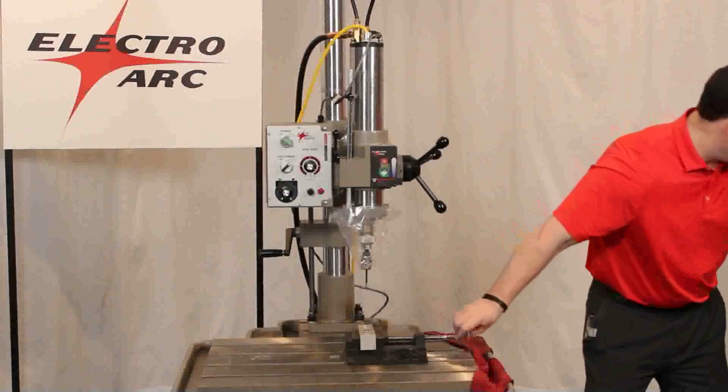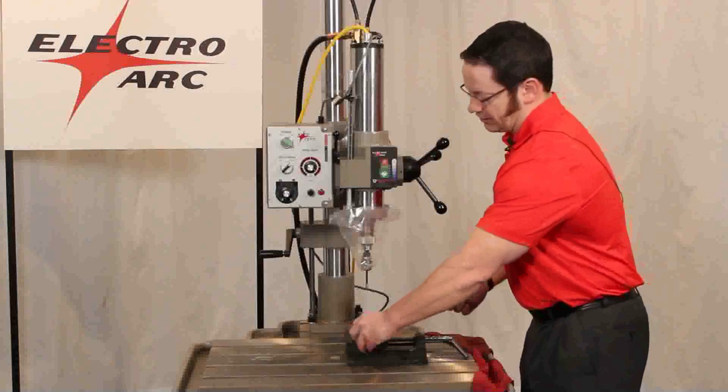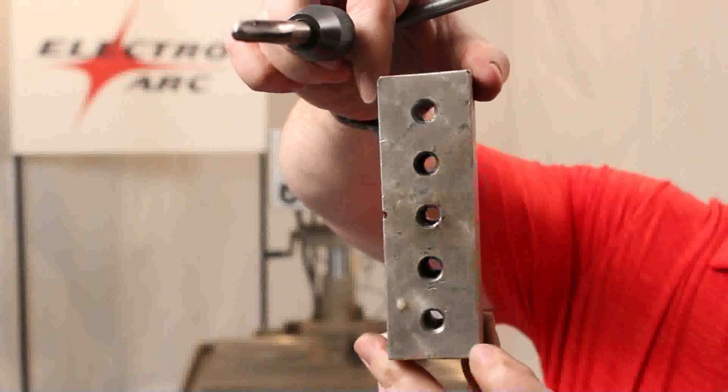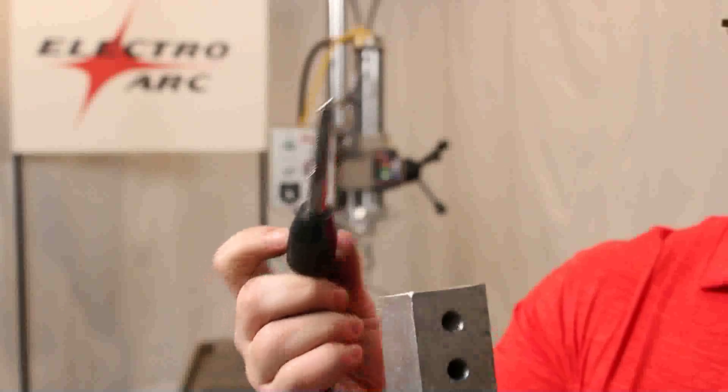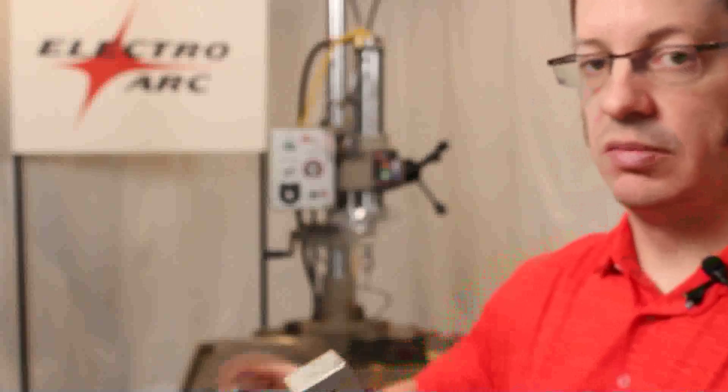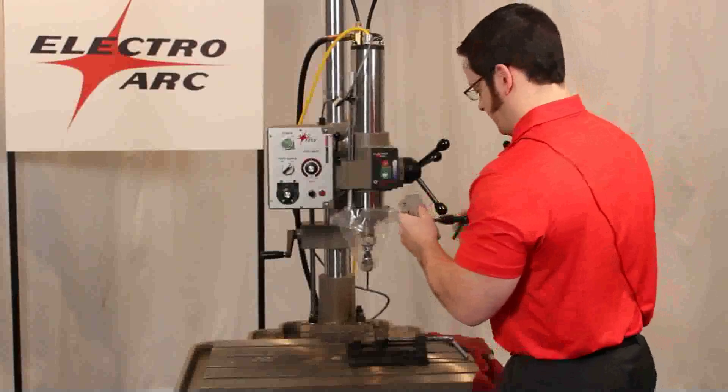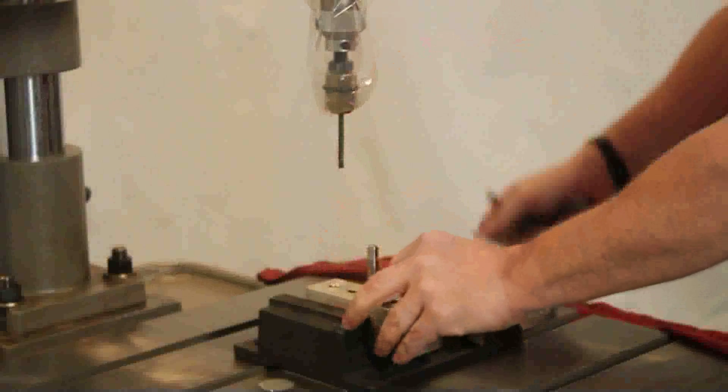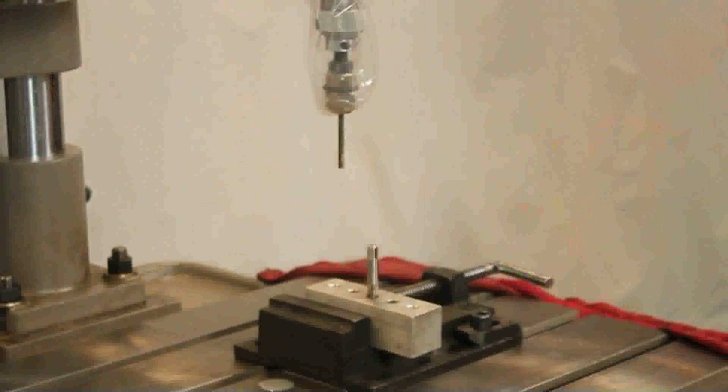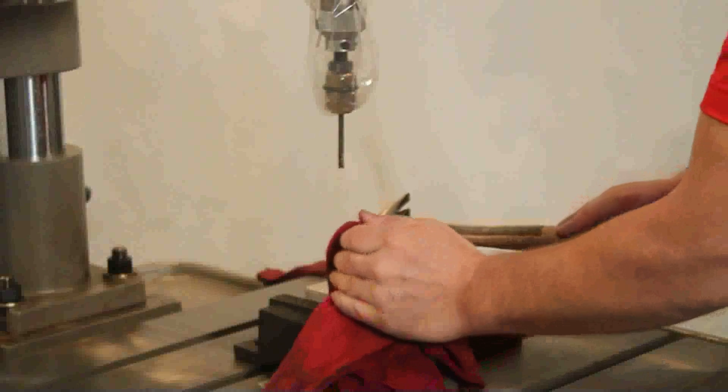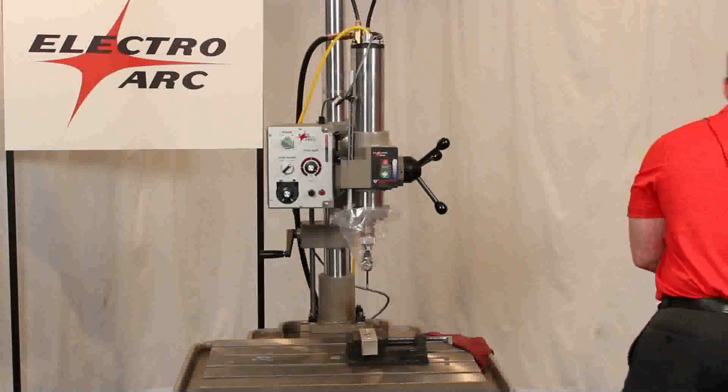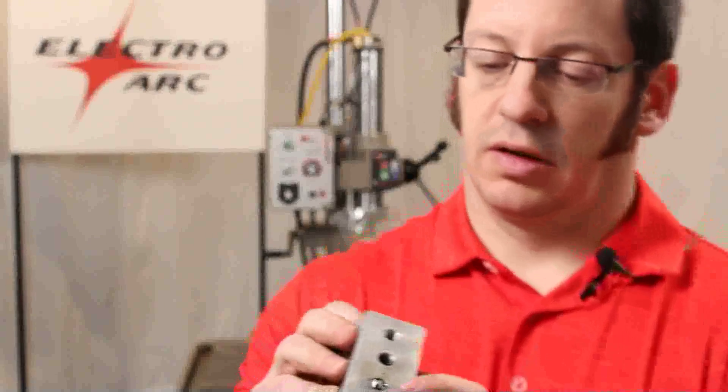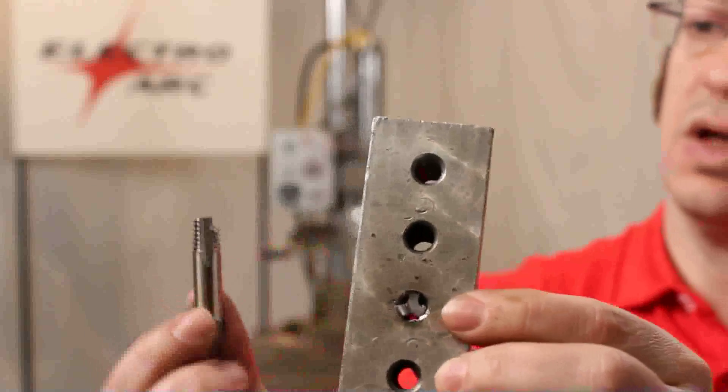What we're going to demonstrate for you today is I have an aluminum block here to simulate a part. As you can see, there should be nothing in any of those holes. We'll use this center hole, and I have a 3/8 inch tap here. We'll just thread that in about an inch deep, break it off, and then take it right back out. All right, so there you can see the tap we have left, and that's what we broke off there.